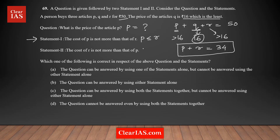Now we're going to think about some values that satisfy this condition. We also know that P and R are both greater than 16, and all three conditions must be satisfied. P has to be greater than 16, so the first value you can think of is 17. If P is 17, then R also has to be 17. That makes sense — 17 plus 17 is 34. This is one valid combination.